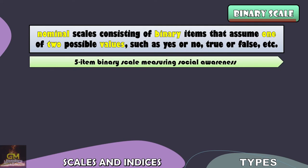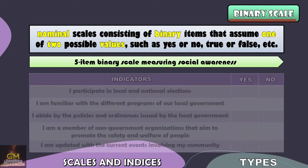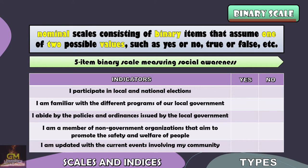Let's have this example: a five-item binary scale measuring social awareness. We have the indicators here, and based on these indicators, the respondent would simply answer yes or no, whichever is applicable to him or her.